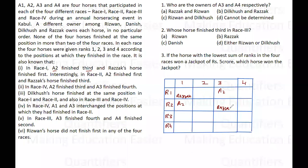In race 4, a2 finished third and a3 finished fourth.